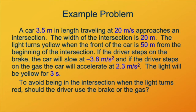Here's a practice problem that can give us a sense of how to approach constant acceleration problems. In this case, we have two constant acceleration scenarios, and we're going to compare their outcomes. We have a car that's 3.5 meters in length, traveling at 20 meters per second, approaching an intersection. The width of the intersection is 20 meters.